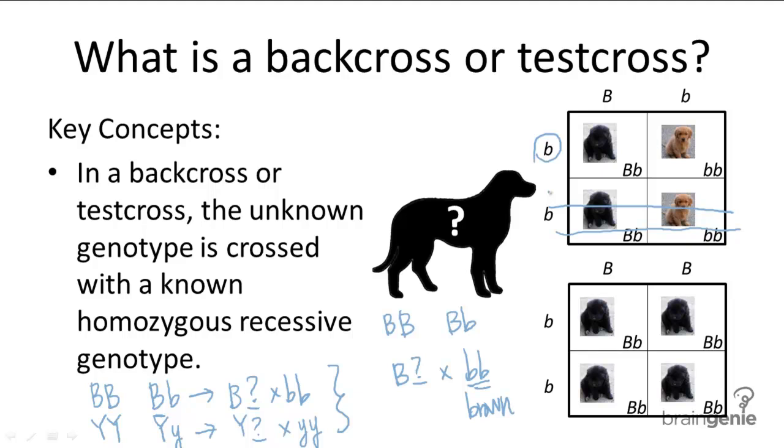Interestingly, if all offspring have black fur, it is not guaranteed that the dog is homozygous. You may just happen to have all black fur offspring despite having a heterozygous parent. It could just be attributable to chance, but it's a pretty educated guess.